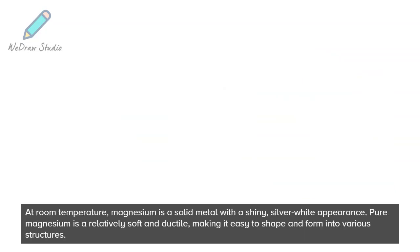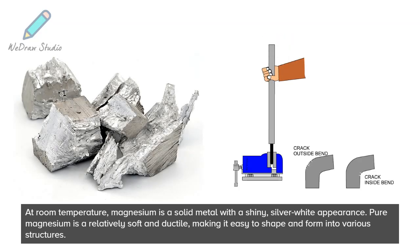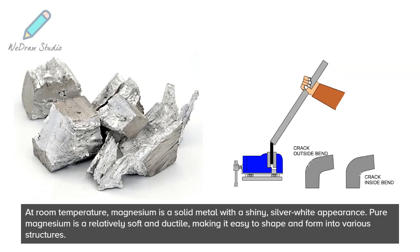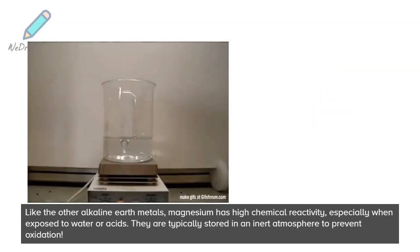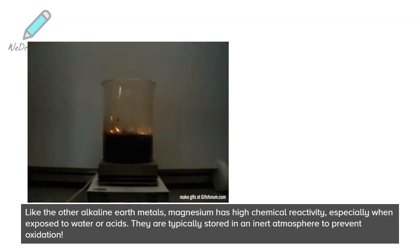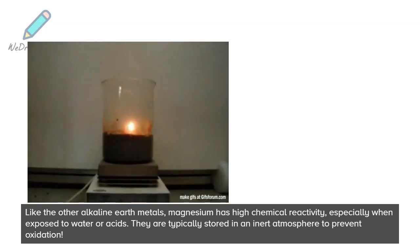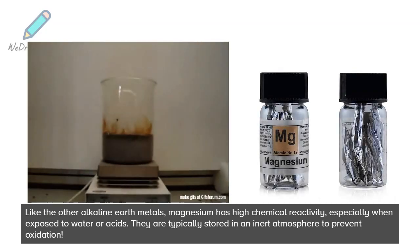At room temperature, magnesium is a solid metal with a shiny, silver-white appearance. Pure magnesium is relatively soft and ductile, making it easy to shape and form into various structures. Like the other alkaline earth metals, magnesium has high chemical reactivity, especially when exposed to water or acids. It is typically stored in an inert atmosphere to prevent oxidation.